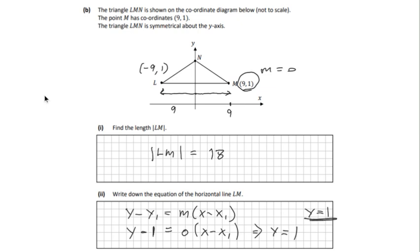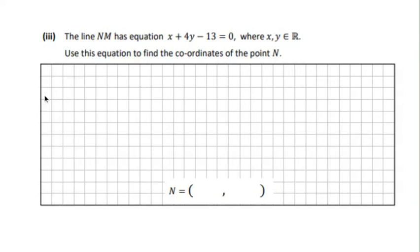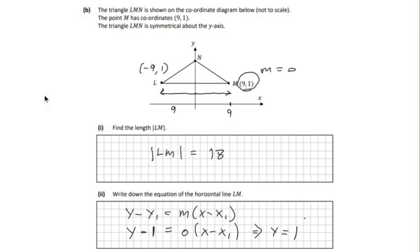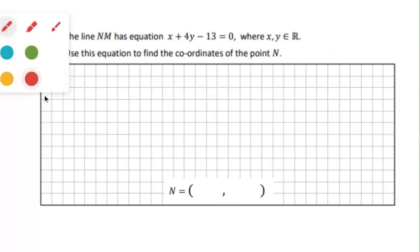Finally, the line NM has equation x plus 4y minus 13 equals 0. Find the coordinates of point N. Point N is the y-intercept. That means on the y-axis, x equals 0.